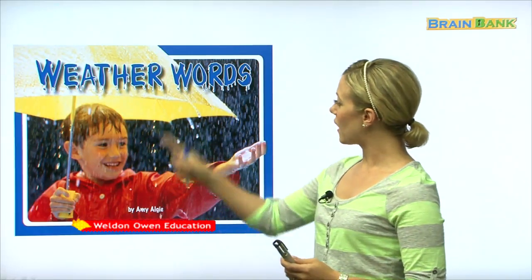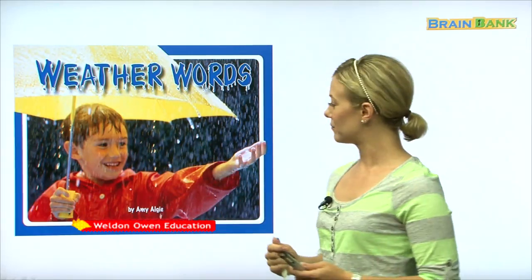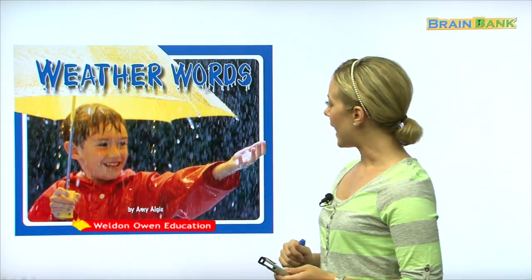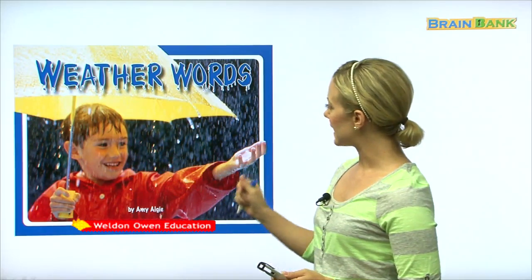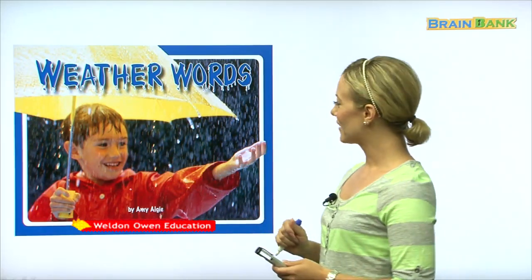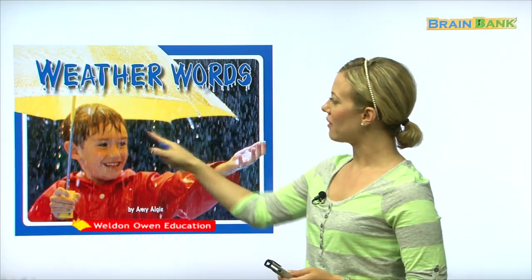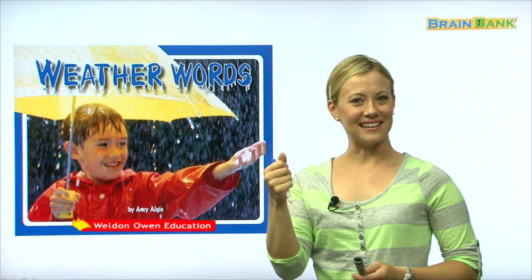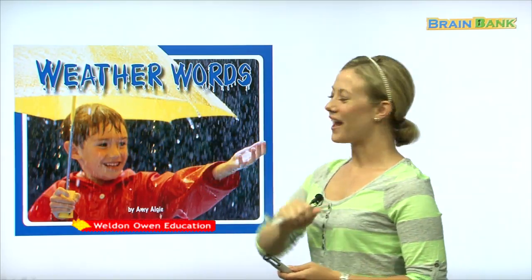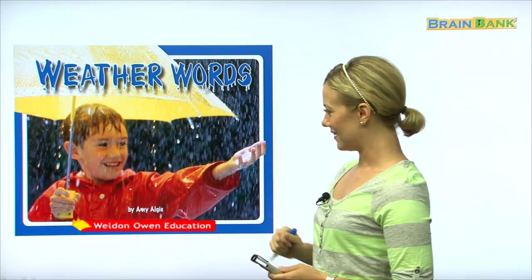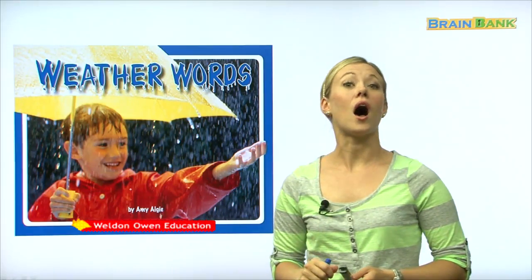Okay, now what do we see on the cover of this book? That's right, we see a little boy, and he is standing in the rain. And what is he holding? What is this big yellow thing above his head? That's right, he is holding an umbrella.